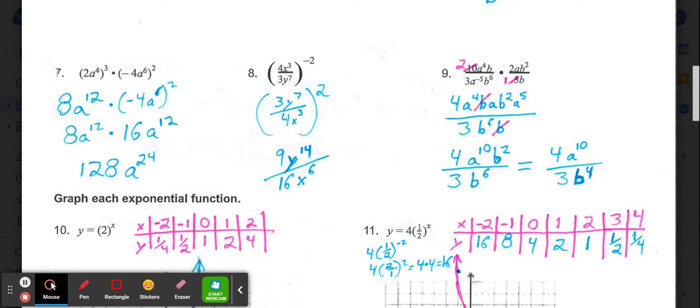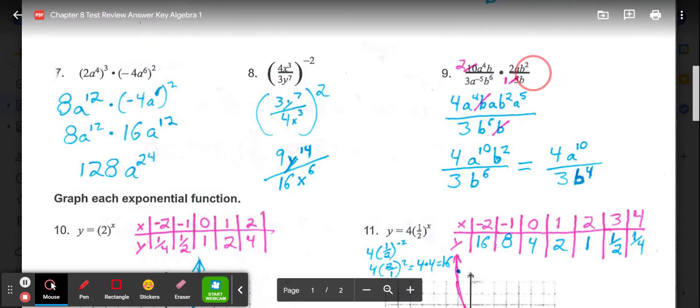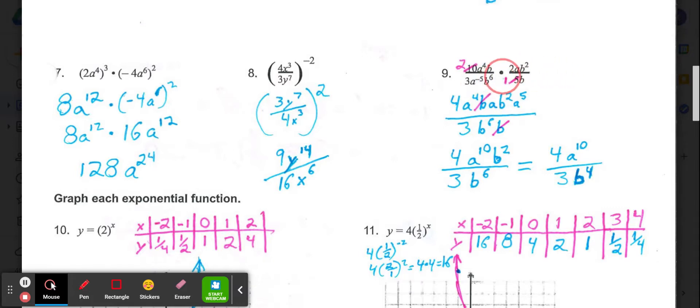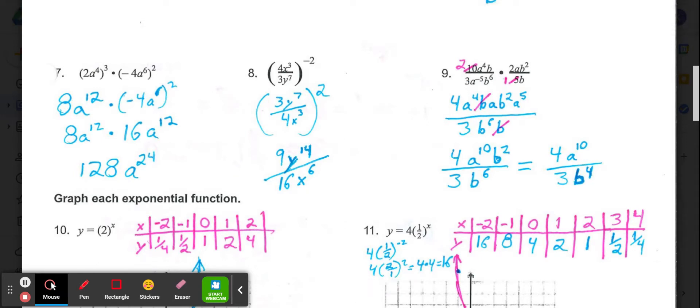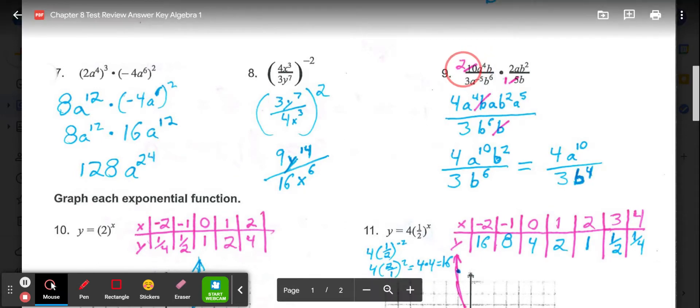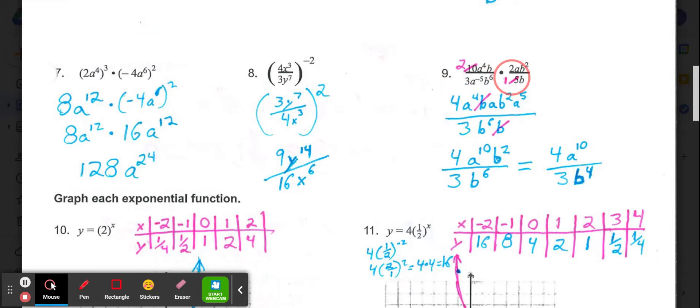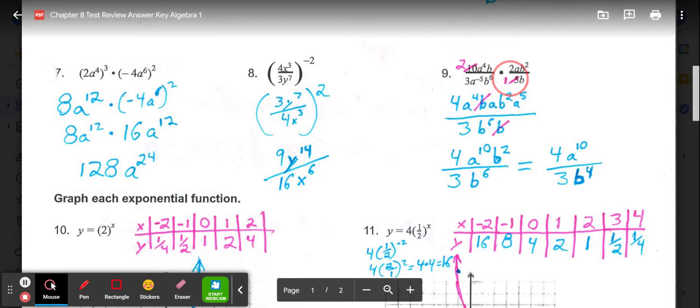And finally in number 9, there's many different ways that we can start to simplify. Realize because it's a fraction times a fraction, we could get rid of this multiplication symbol and just write this whole thing as one big problem with the top and the bottom all being multiplication. Right away though, what I notice is a 10 out in front and a 5 down here can be simplified to 2 and 1.